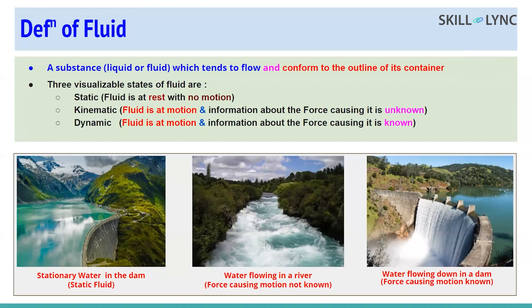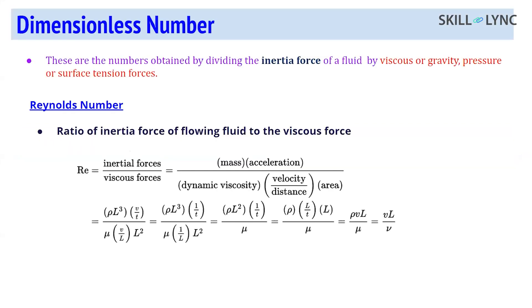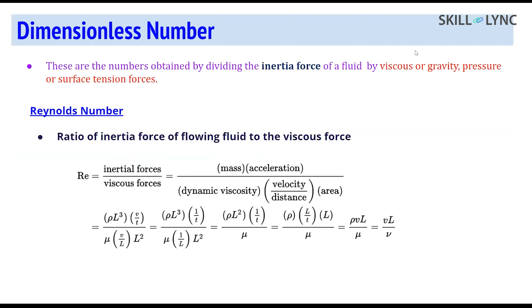You should understand the important terminologies we come across when doing a CFD analysis, before we go to the CFD layout and understand how cfMesh works. Dimensionless numbers play a vital role when you are trying to classify a fluid - whether it is compressible or incompressible, laminar or turbulent. These dimensionless numbers are obtained by dividing the inertia forces of a fluid by any of the other forces - viscous, gravity, pressure, or surface tension forces. Dimensionless numbers essentially reduce the amount of parameters required to understand the behavior of the flow.